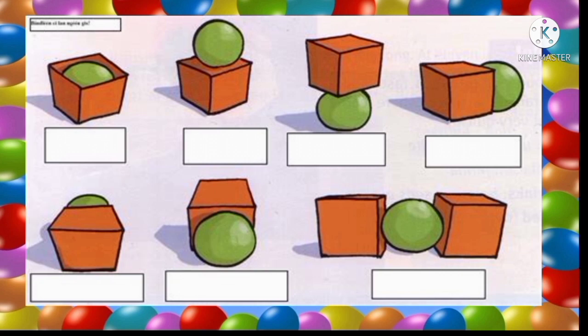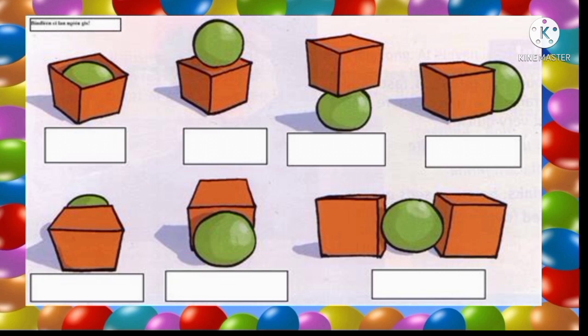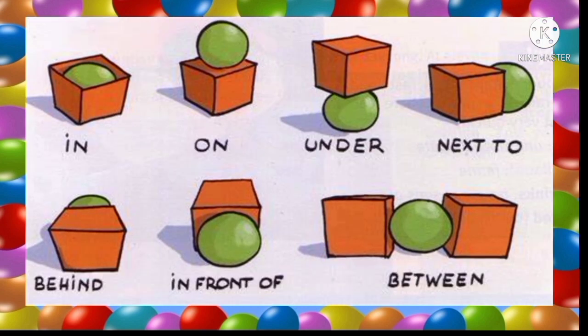Behind the box. Excellent. Next picture: the ball is in front of the box. And the last picture: the ball is between the boxes. So the answers are: in, on, under, next to, behind, in front of, between. These are called prepositions — words that come after the noun and build a relationship with another noun. Prepositions tell the position of a noun or pronoun.